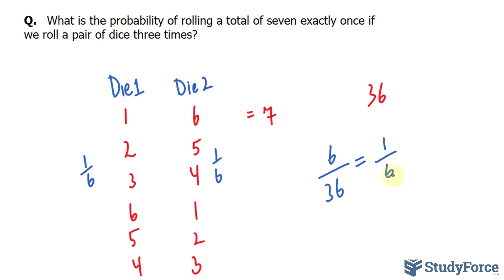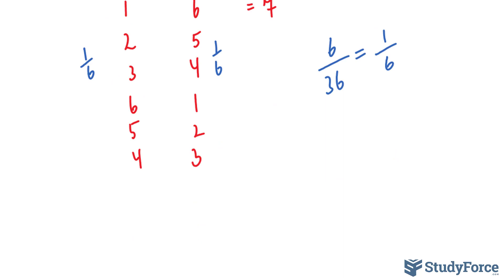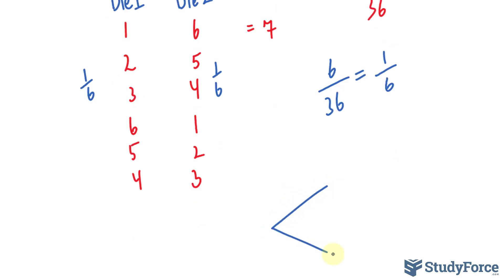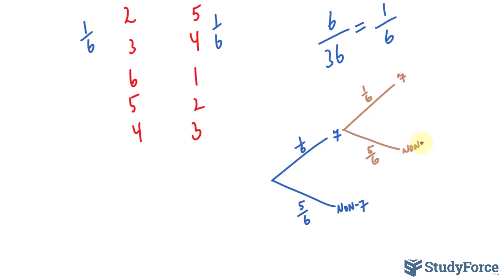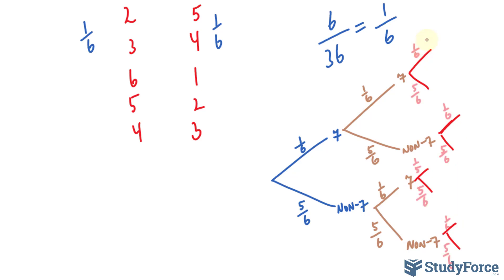Because we think of this experiment as occurring in three stages — rolling the dice the first time, the second time, and the third time — we can represent the answer by drawing out a tree diagram. In our first roll, there are two situations: you get a seven, with a one in six chance, or a non-seven. In the second roll, again there's a one in six chance of getting a seven and five in six for a non-seven. Same for the third roll — the third set of branches.